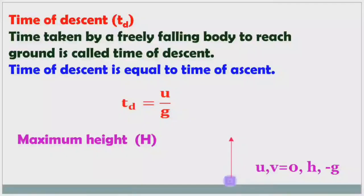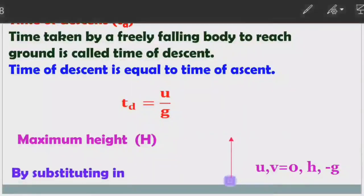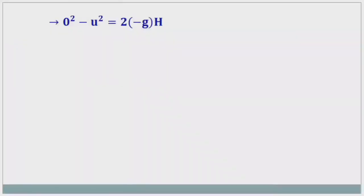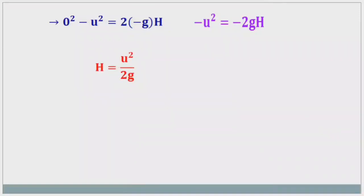Here height is h, and the object is moving opposite to the direction of free fall acceleration, so a = −g. Substituting in the third equation, v² − u² = 2as: v is 0, so 0 − u² = 2(−g)h, which gives minus u² = minus 2gh. Cancelling the negatives, h = u²/2g. This is the formula for maximum height.